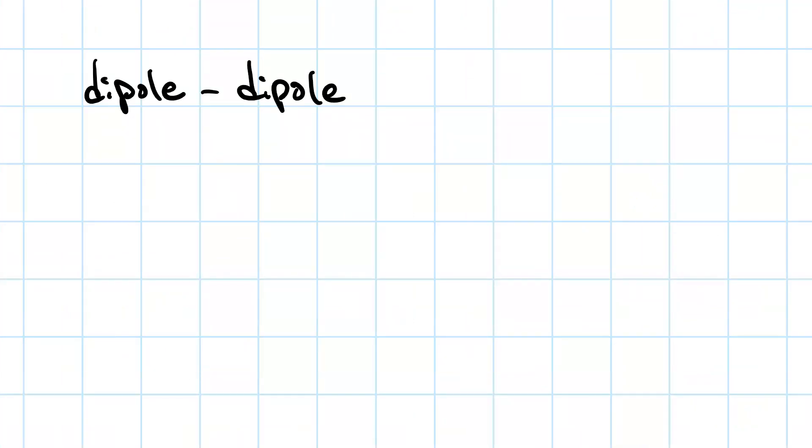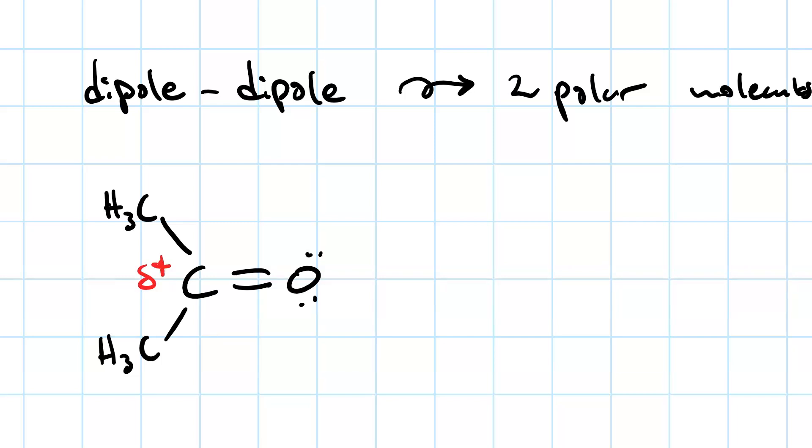Dipole-dipole is a stronger type of interaction than LDF for comparable molecular weights, low molecular weights. Dipole-dipole requires two polar molecules. Here's a molecule of acetone that has a CO bond that is very polar. And so, we have a partial positive charge on the carbon and a partial negative charge on the oxygen. Bring one acetone molecule in proximity with another and the positive end of one will be attracted to the negative end of the other. And that dashed line represents a dipole-dipole interaction.